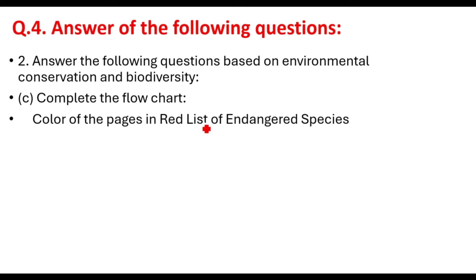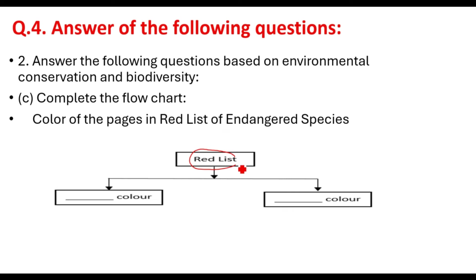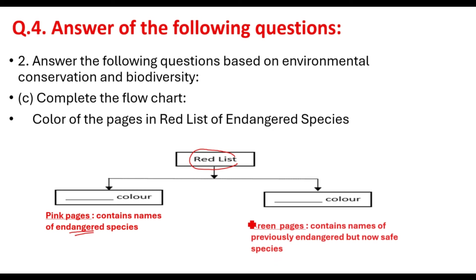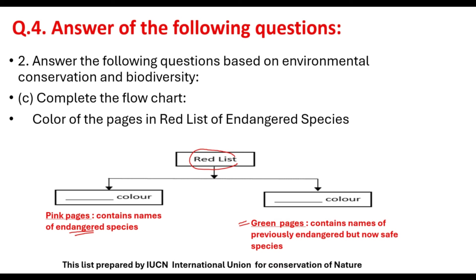Third question: complete the flow chart of the Red List of endangered species. The Red List has two parts: pink pages contain names of endangered species, and green pages contain names of previously endangered species that are now safe. The organization responsible for this list is IUCN — International Union for Conservation of Nature. This concludes our model answers. Thanks for watching. Please share this video with other students so they can also benefit. Thank you very much and best of luck.